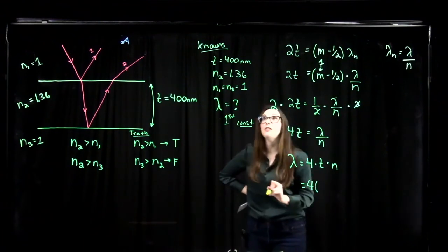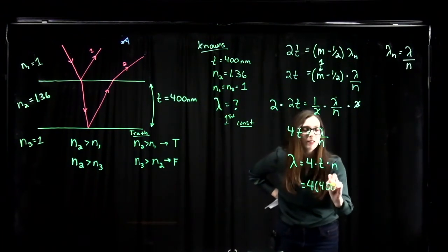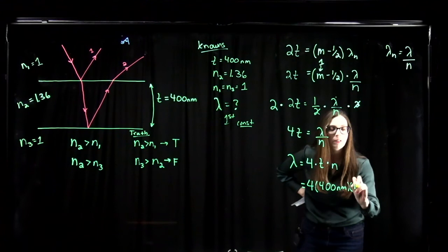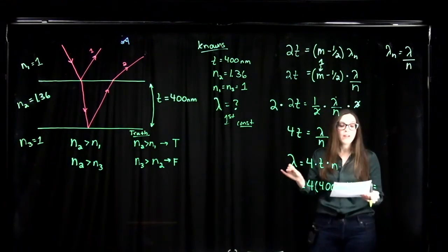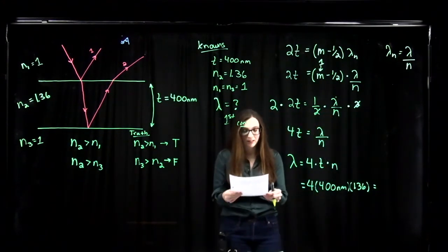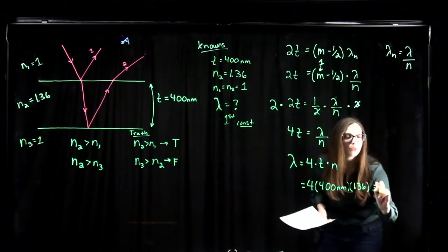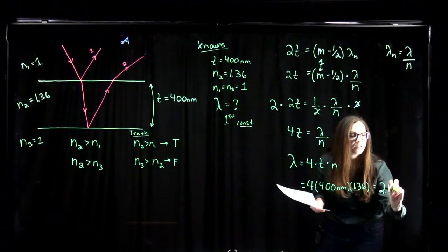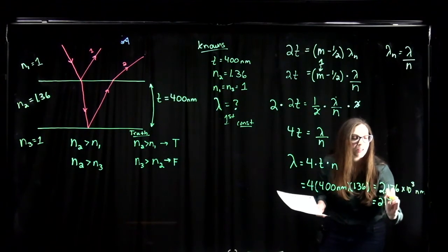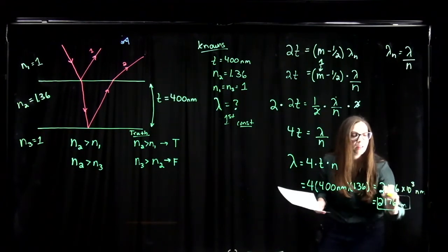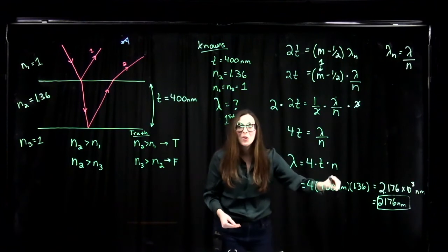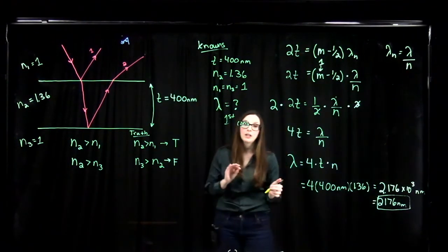So lambda equals 4 times 400 nanometers times 1.36, which gives us 2.176 times 10 to the 3 nanometers, or 2,176 nanometers. That is the wavelength of light that will result in the first constructive interference in the reflected light. This wavelength is not in the visible spectrum — we would not be able to see it with our eyes.